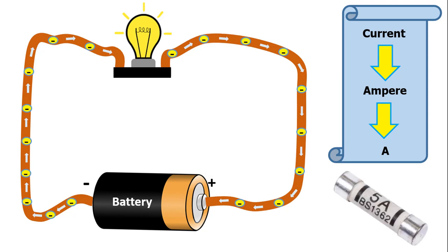For example, this fuse has the number 5 on it and a capital letter A next to it. This means it is rated for 5 amps of current.